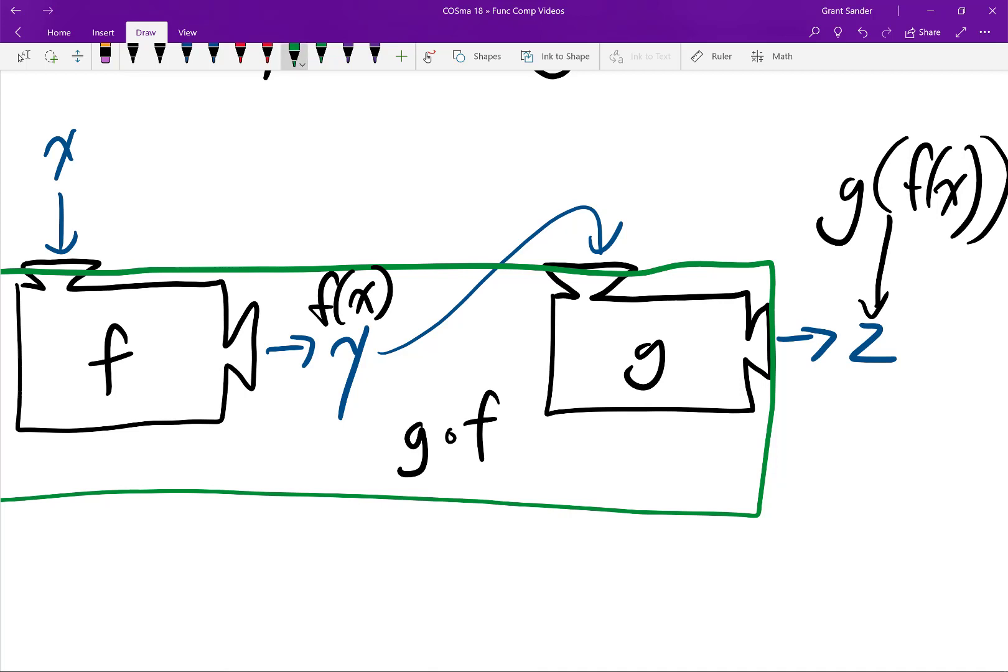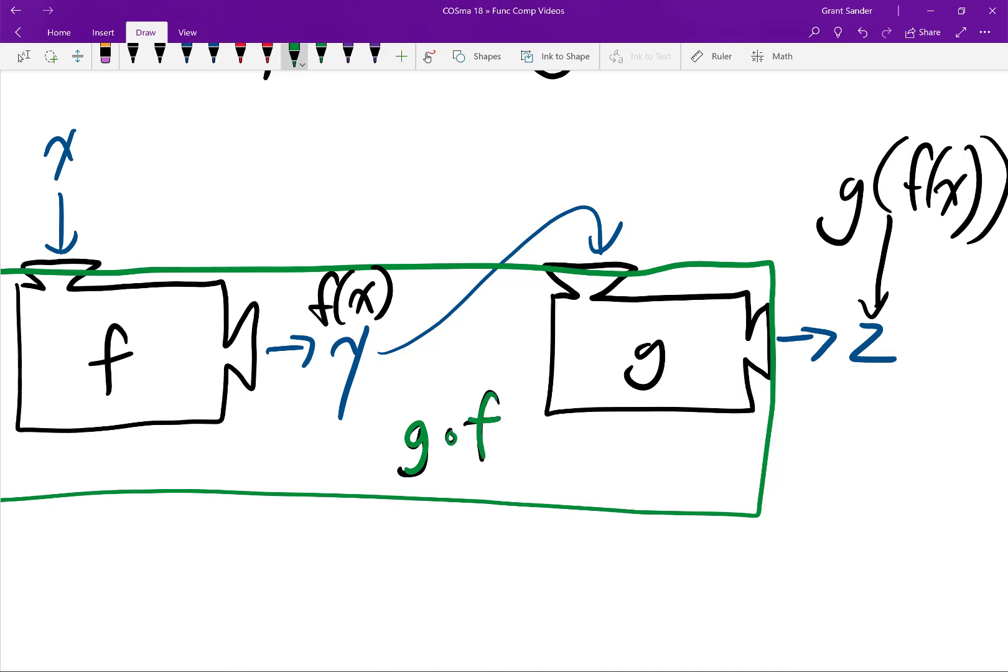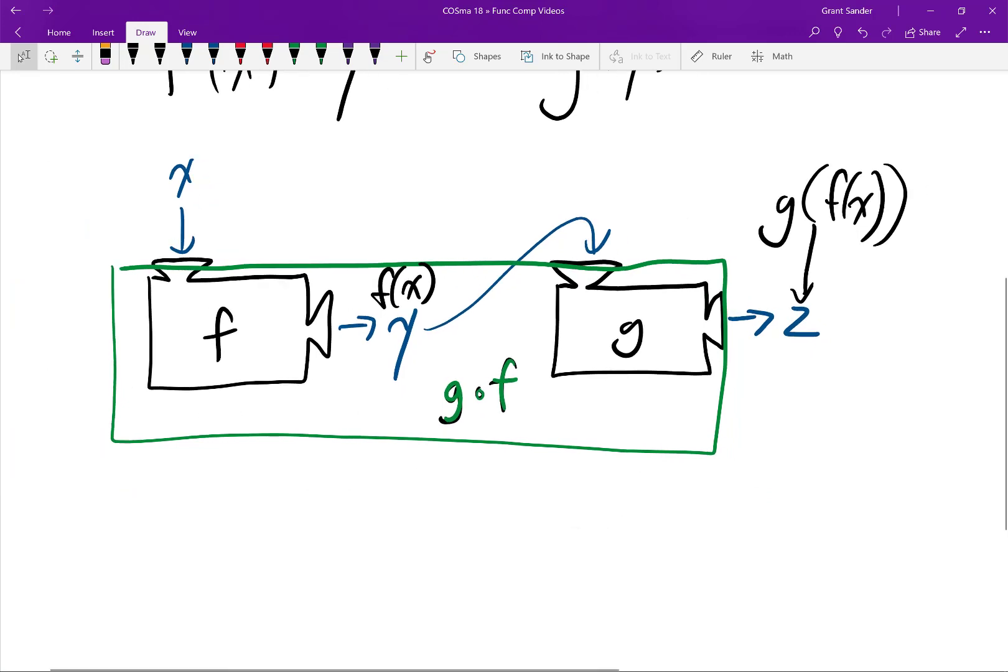I should have wrote that in green. So g of f. Now it's not an o, it's like a floating little circle there. So that notation is what we use to name this function whose output is g of f of x.